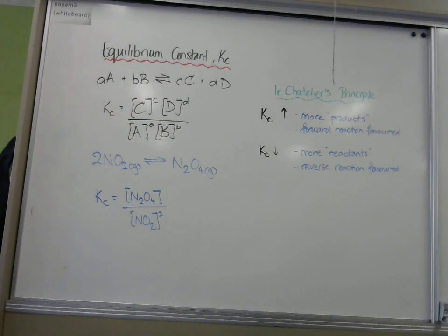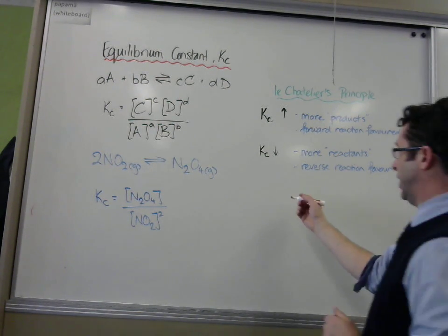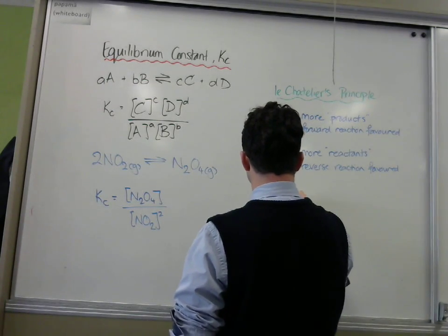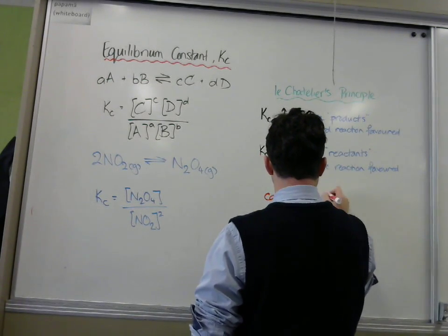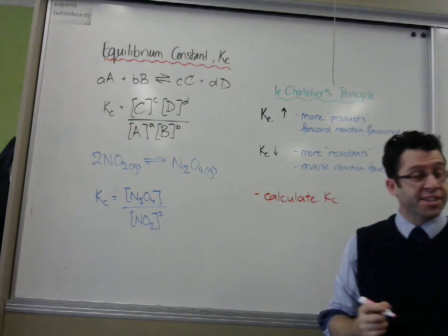That is calculating it, given the concentration, so you would be given some numbers to plug in there, and you'd have to know whether to square them, or to the power of three, or the power of four, or whatever. It's calculating that you have to be able to do. So that's one thing you have to be able to do, is calculate Kc.